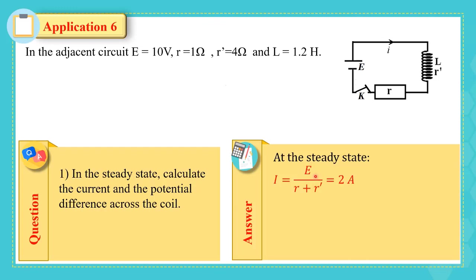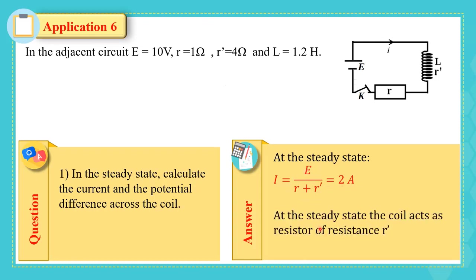At steady state, i is constant and equals E / R_total, so i = E / (R + R') = 2 A. The coil acts as a resistor of resistance R' since di/dt = 0. The voltage across the coil equals R'i = R' × i_max = 4 × 2 = 8 V.